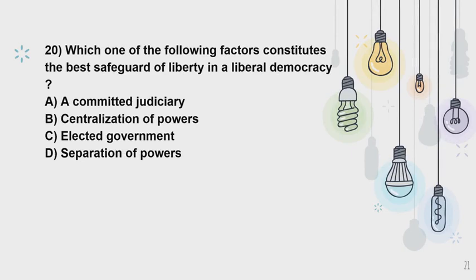Question 20: Which one of the following factors constitutes the best safeguard of liberty in a liberal democracy? The correct option is Option D: separation of powers. The separation of powers between the legislature, the executive, and the judiciary constitutes an important safeguard of liberty. The doctrine of separation of powers entails division of legislative, executive, and judicial functions among different organs. This minimizes the possibility of arbitrary excesses by the government, since all three organs act as checks and balances on each other. This demarcation prevents concentration of excessive power by any branch and thus safeguards the liberty and rights of the people in a democracy.